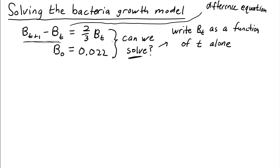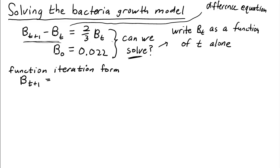To solve the model, it's sometimes more convenient to write the dynamical system in a different form — what I'll call function iteration form. In function iteration form, we write b_{t+1}, the new value, as simply some function of the old value. For our given model, what is f? To find f, we just need to solve for b_{t+1}.